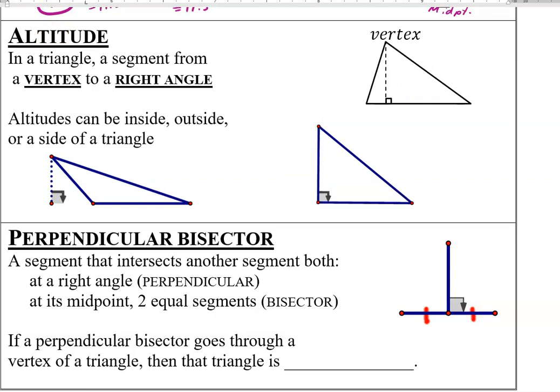Next segment for us to talk about is a perpendicular bisector. Perpendicular bisector is pretty straightforward. The name tells you exactly what it is. Something has to be perpendicular, which means it meets at a right angle. And it has to bisect something, which means it goes through its midpoint or splits it into two equal segments. So the fact that these two segments are equal means the thing has been bisected right there at that point.